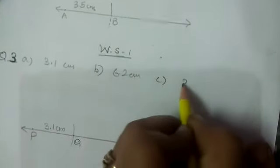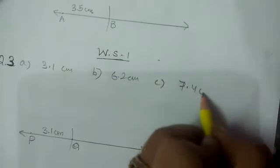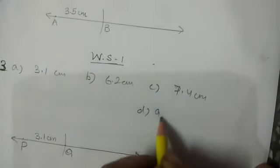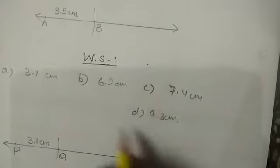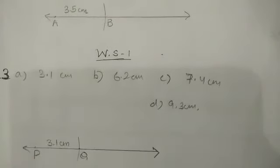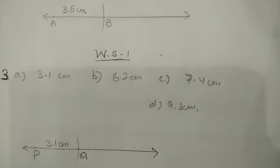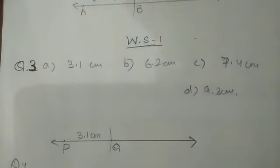Now the length of PQ is 3.1 centimeter. In the same way, we are given B part 6.2 centimeter, C part 7.4 centimeter, D part 9.3 centimeter. You will do this question complete yourself.